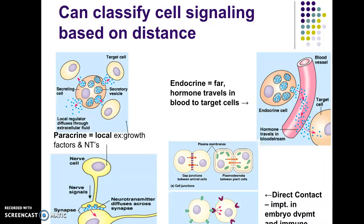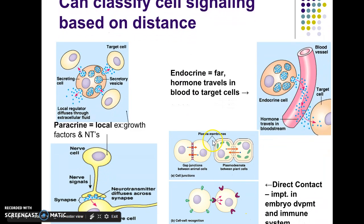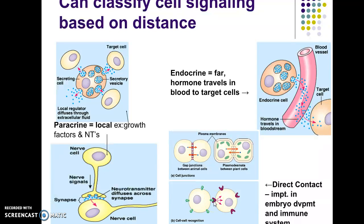For cell signaling, it can be classified based on distance. You have local cell signaling and then you have long distance cell signaling. For local cell signaling, you're already familiar with gap junctions between animal cells and plasmodesmata, and also cell-to-cell recognition — probably familiar from chapters six and seven. For cell-to-cell recognition specifically, that's why we have glycoproteins; they act as your identity markers. This is what we call direct contact and it's important in embryo development and the immune system.